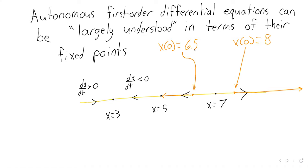In these autonomous differential equations, you can think of the fixed points as barriers — like locked doors. You cannot jump over a fixed point. So if we start here, we go downwards, but once we reach five, we're stuck. There's no way to jump over five. So basically, the same model as the population model.